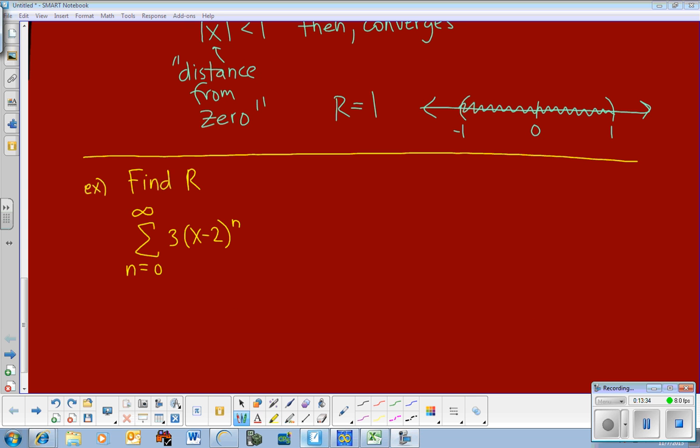I wanted to give you an example that wasn't centered at 0 because it's going to look a little different. I'm just going to go through this one quickly. What's the radius of convergence? Now this thing is centered at 2. So what we're looking for is does this thing converge only at 2 or does it converge at values close to 2? Same thing is going to happen. The limit as n goes to infinity of the next term, which would be 3 times (x minus 2) to the (n plus 1), over the current term, which is 3 times (x minus 2) to the n.